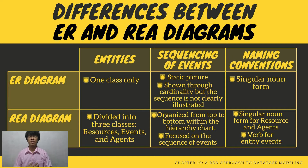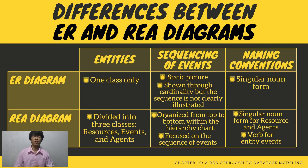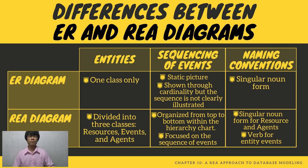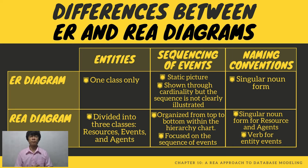On Sequencing of Events, the ER Diagram is a static picture — it shows only through cardinality, and the sequence is not clearly illustrated. While the REA Diagram is organized from top to bottom within a hierarchy chart, focusing on the sequences of events, unlike the ER Diagram. In terms of Naming Conventions, the ER Diagram uses singular nouns for entities, while the REA Diagram uses singular nouns for resources and agents, and verbs for event entities.